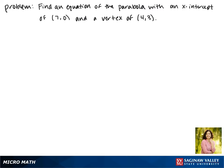Today we'll be finding an equation of the parabola with an x-intercept of (7, 0) and a vertex of (4, 3).